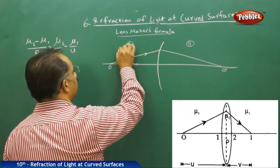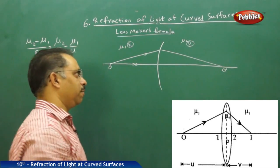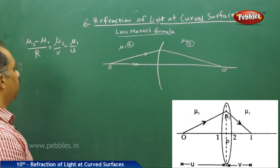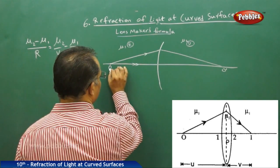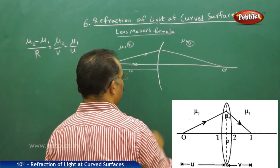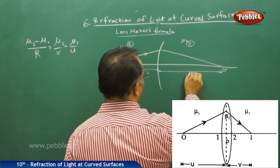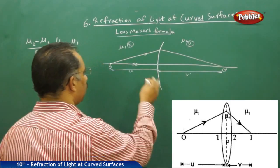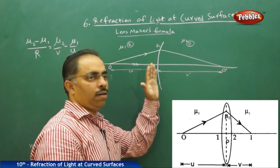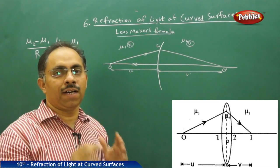I assume that mu1 is the refractive index of the rarer medium and mu2 is the refractive index of the denser medium. P is the pole, and all distances are measured from the pole. The object distance is u, the image distance is v dash, and r1 is the radius of curvature for this particular surface. I am drawing only one surface out of the two surfaces of the biconvex lens.